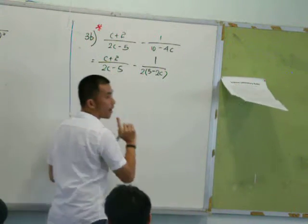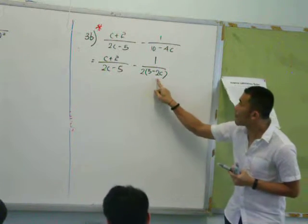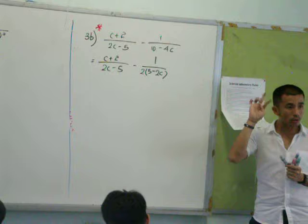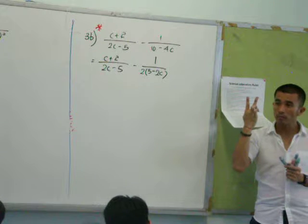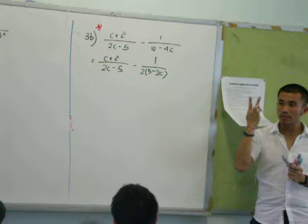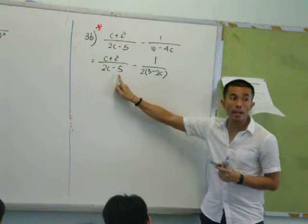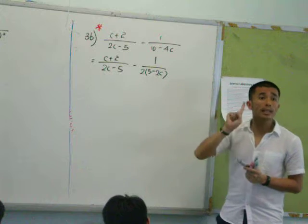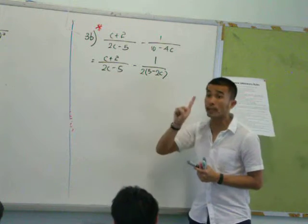This is 2c minus 5, correct? This is 5 minus 2c. Are they going to look alike? Okay, this is 2c minus 5, but this is 5 minus 2c. What can we do to make these two the same?